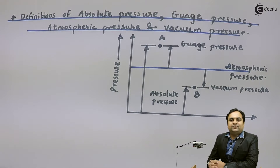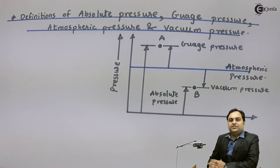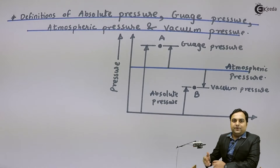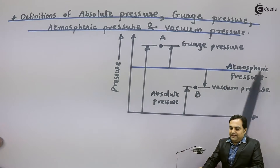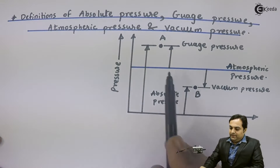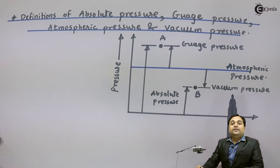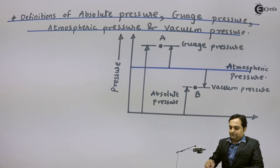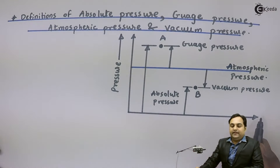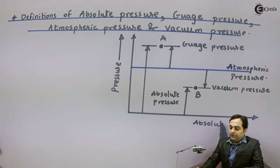Hello friends, in this video we will see the definitions of absolute pressure, gauge pressure, and vacuum pressure. For that purpose we have a diagram here. In this diagram, the blue line indicates atmospheric pressure — the pressure of the atmosphere around us. The horizontal line at the bottom indicates absolute vacuum.